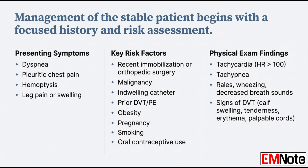That covers the crashing patient. Let's shift to the more common scenario: the stable patient. Once their vitals look okay, you move to risk stratification — a really focused history and physical exam. Their stability could be misleading; they might have mild symptoms or even no symptoms at all, so you can't get complacent. The classic symptoms are dyspnea, pleuritic chest pain that gets worse when they breathe in, and sometimes hemoptysis — coughing up blood. You must also check for signs of a deep vein thrombosis: leg pain or swelling. In the history, you're looking for recent immobilization, a long flight, bed rest, recent orthopedic surgery, active cancer, or an indwelling catheter. Lifestyle factors like obesity, pregnancy, smoking, and oral contraceptive use are all major ones too.